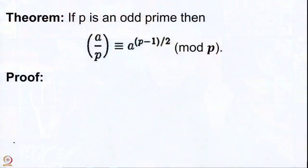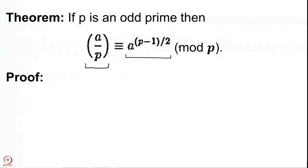Since the Legendre symbol is multiplicative, (G^I / P) = (G/P)^I = (−1)^I. This means once you know a primitive element, you can write every element as a power of it and compute all Legendre symbols easily. This is also computationally valuable: on the left we have the Legendre symbol taking values 1, −1, or 0, but on the right we have something purely in terms of A — specifically A^((P−1)/2) mod P — which is straightforward for a computer to calculate.